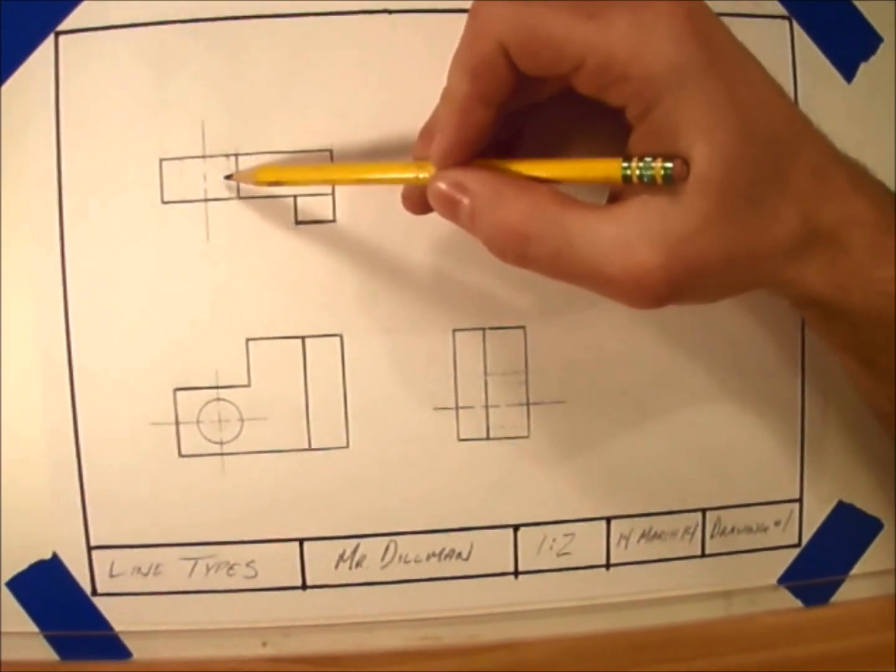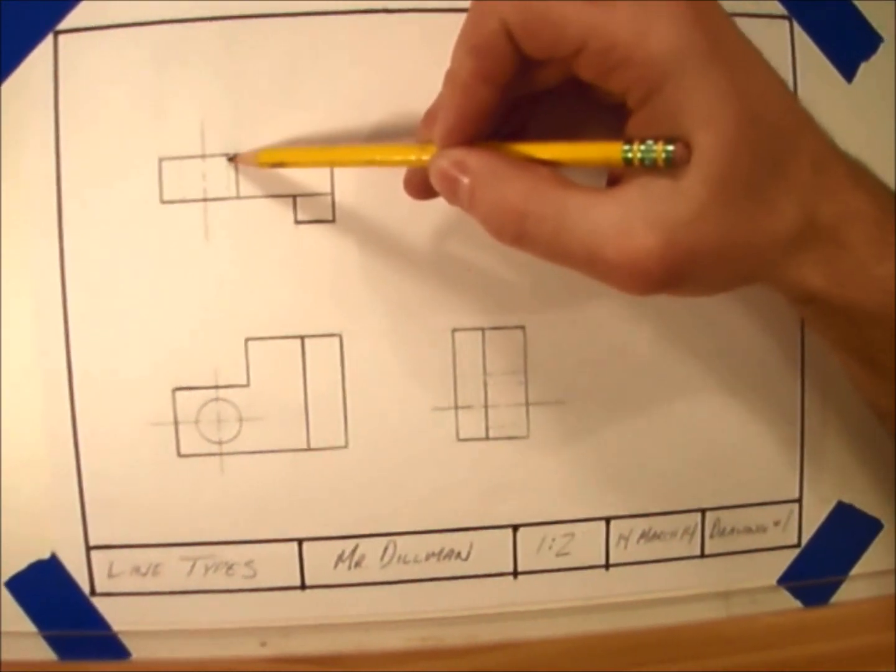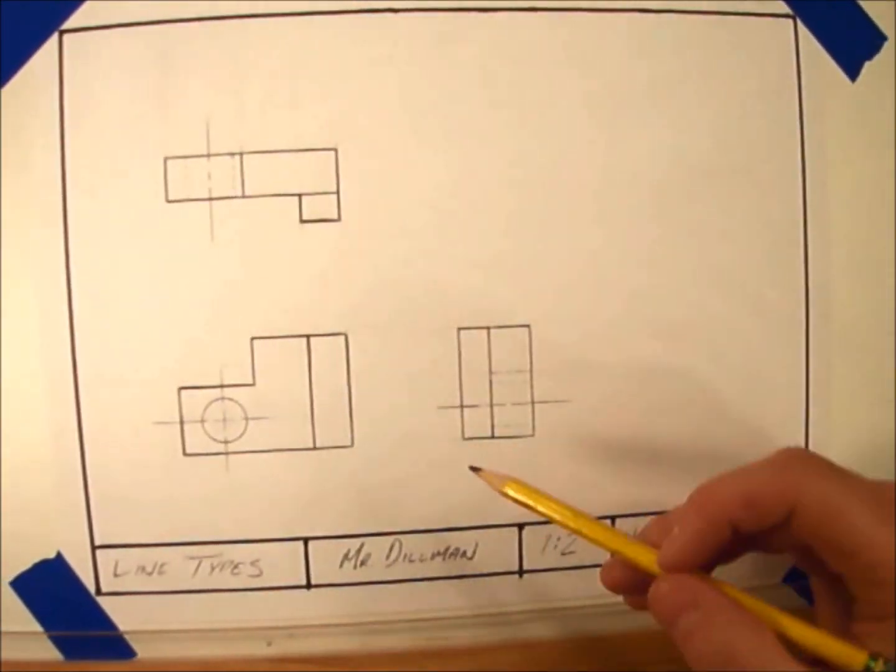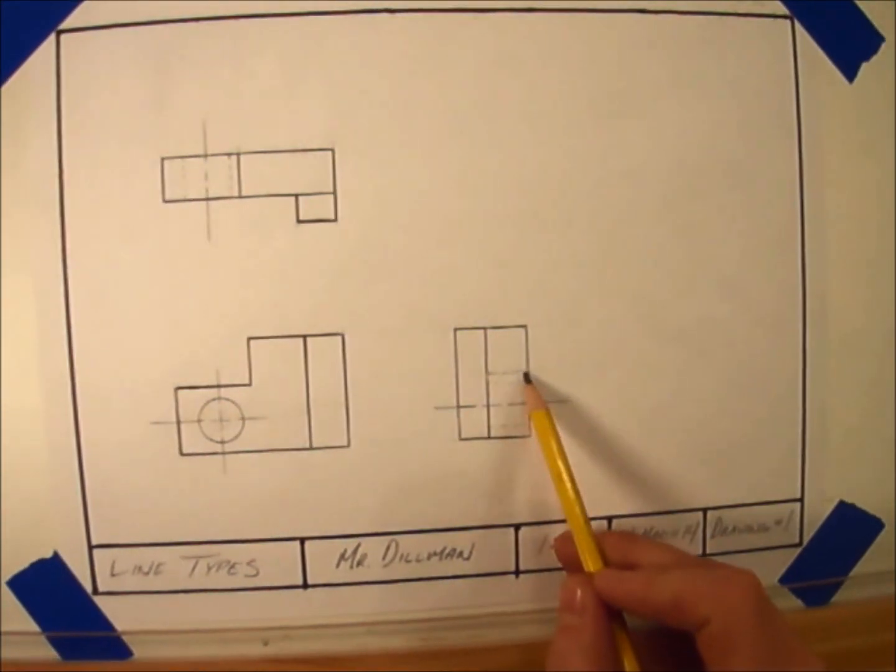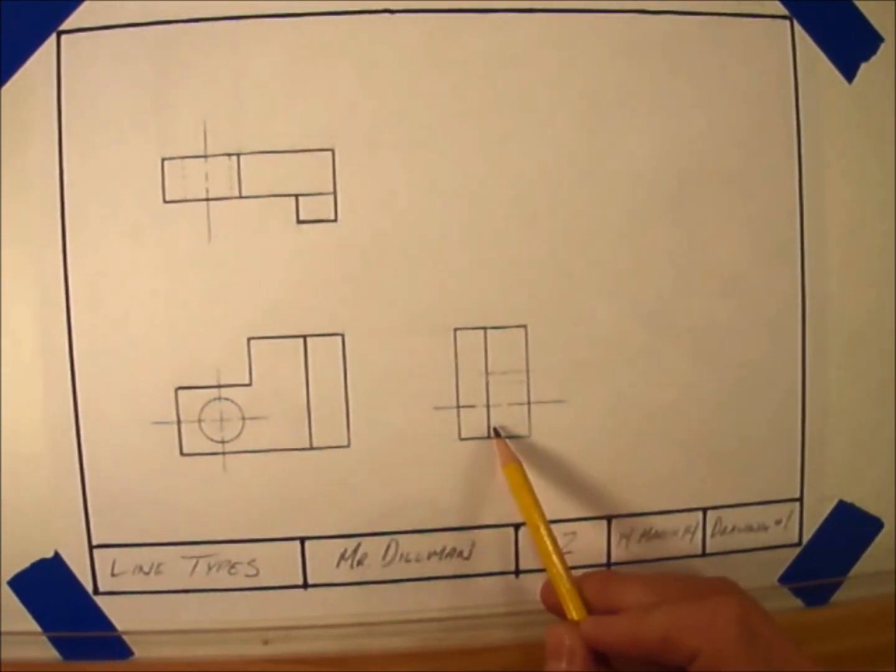Our next line type is called a hidden line. Hidden lines are light, dotted lines that show edges of the object which are not directly visible in an orthographic view. Take a look at this example.